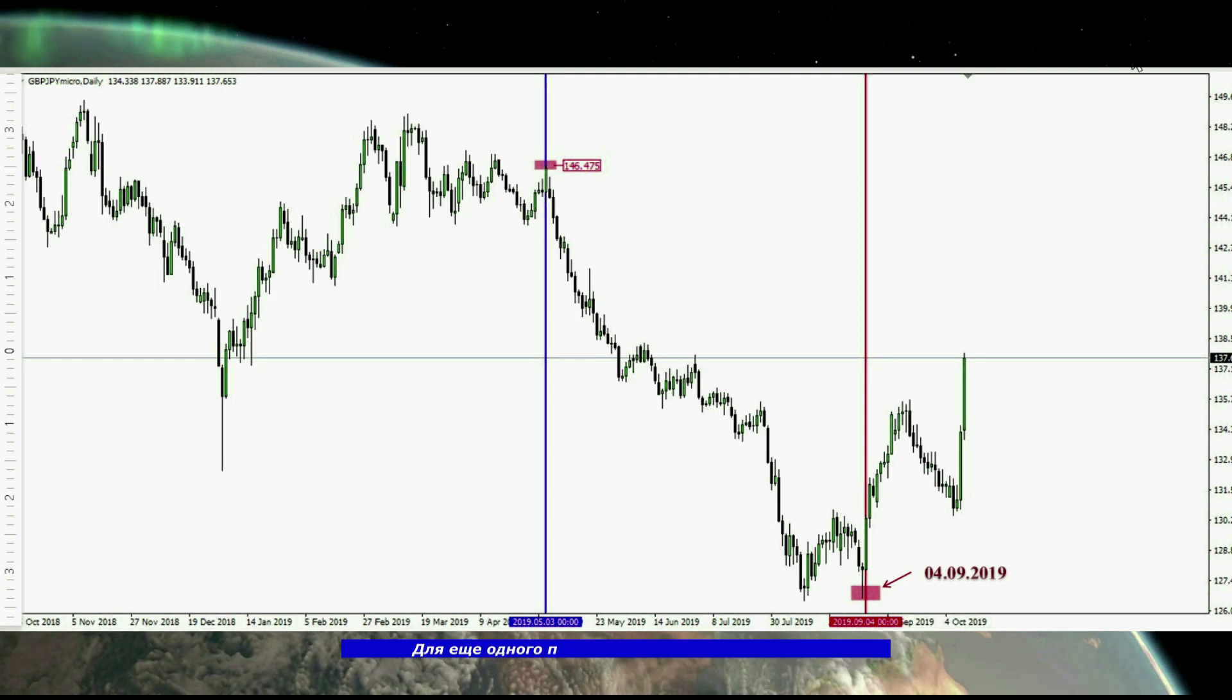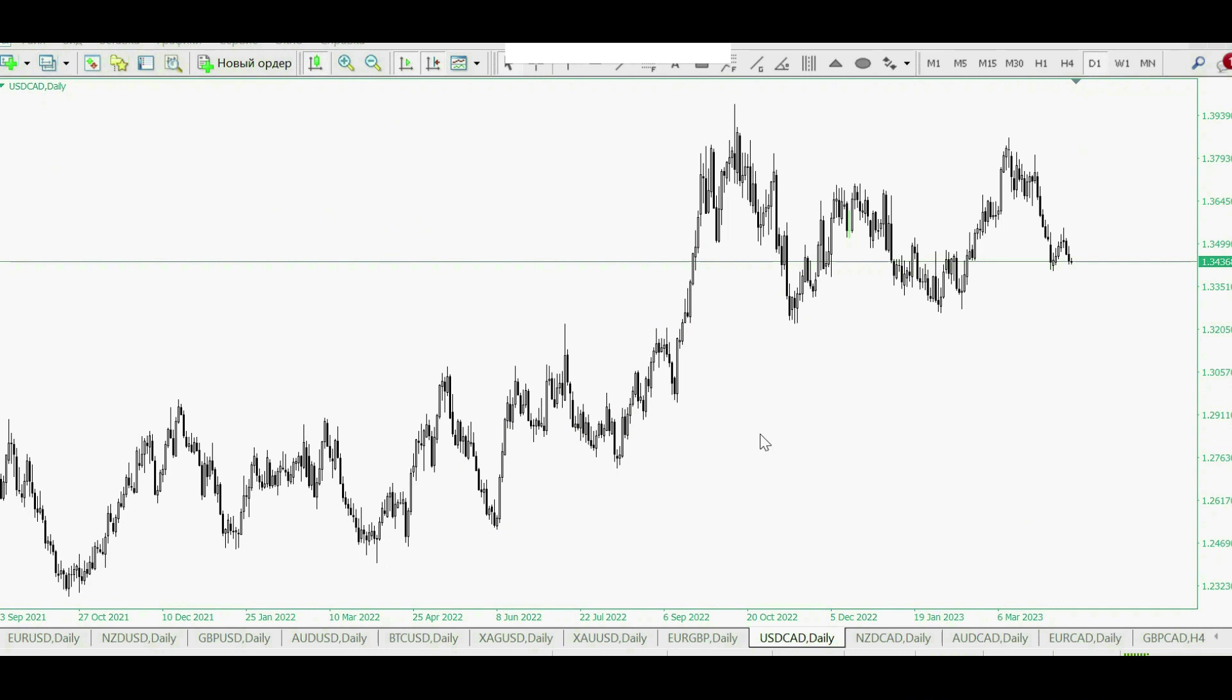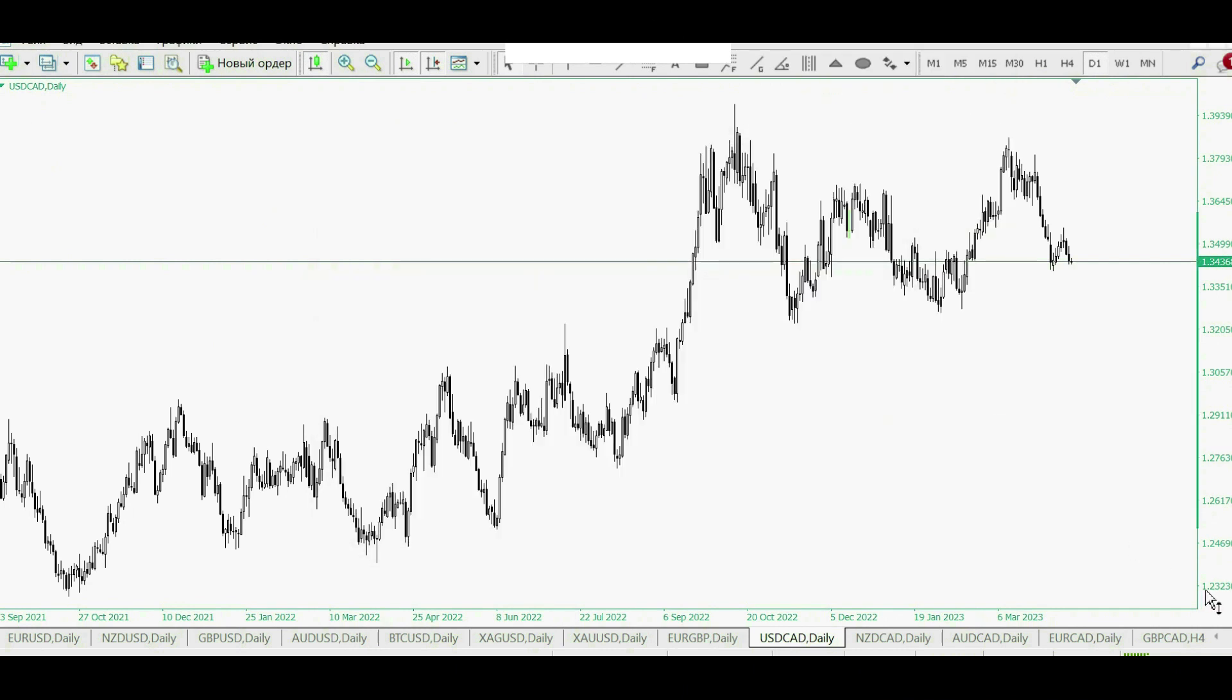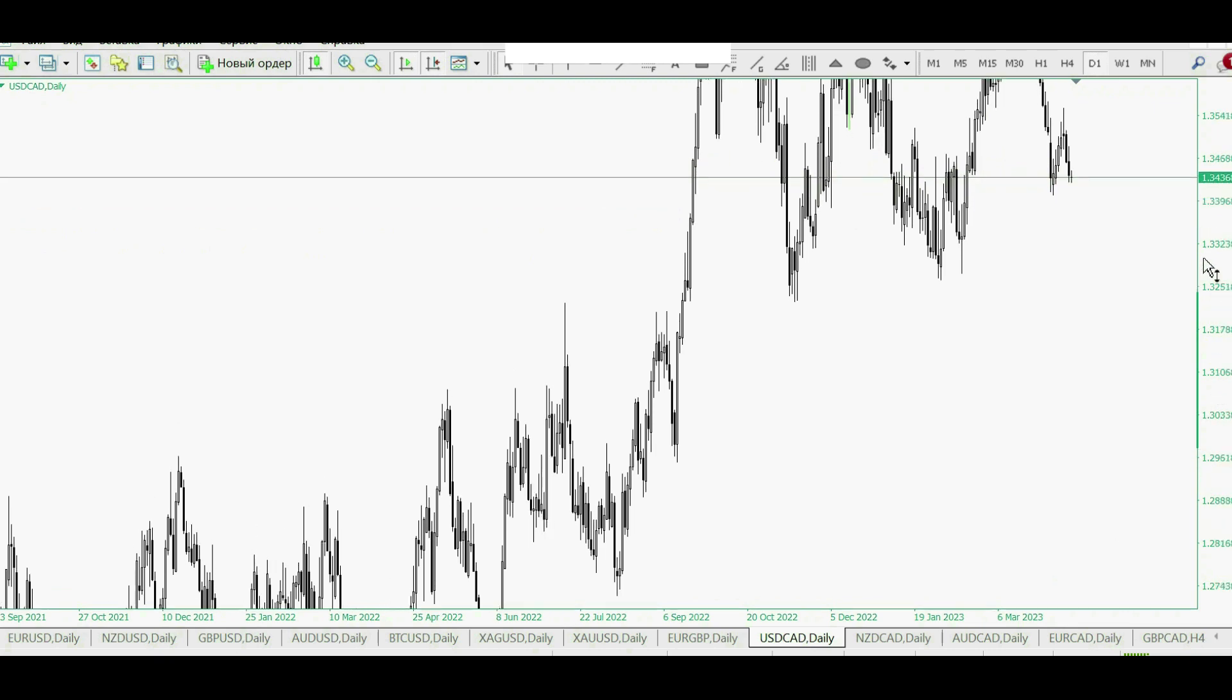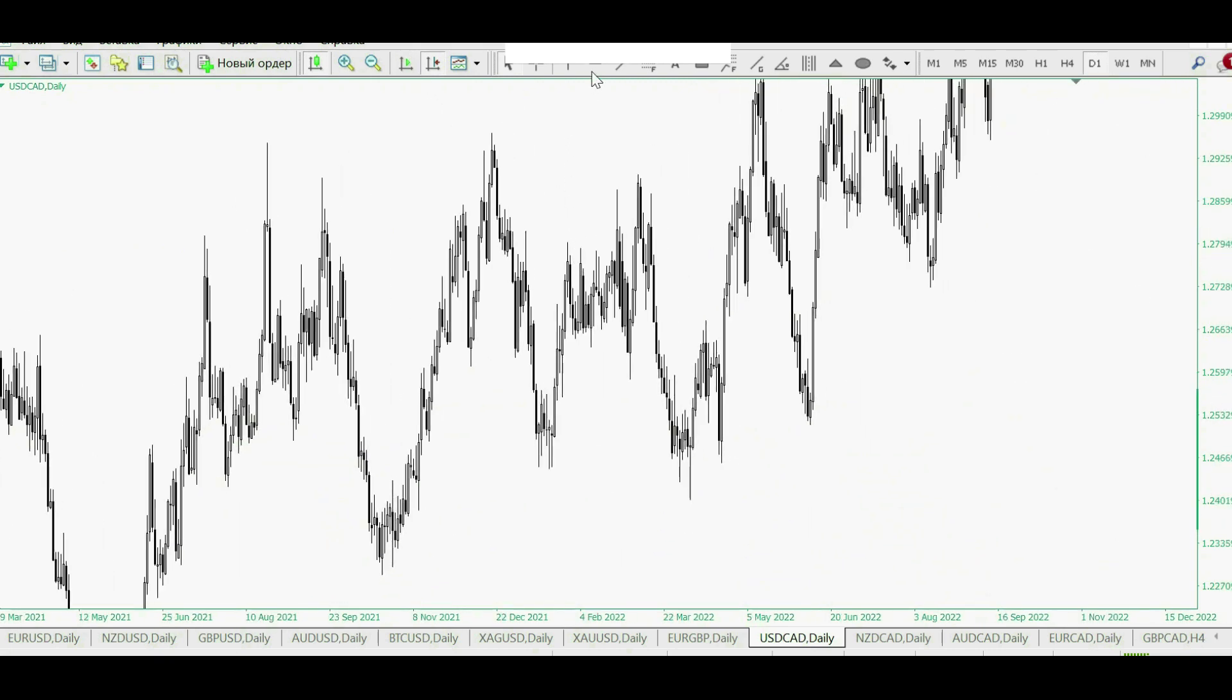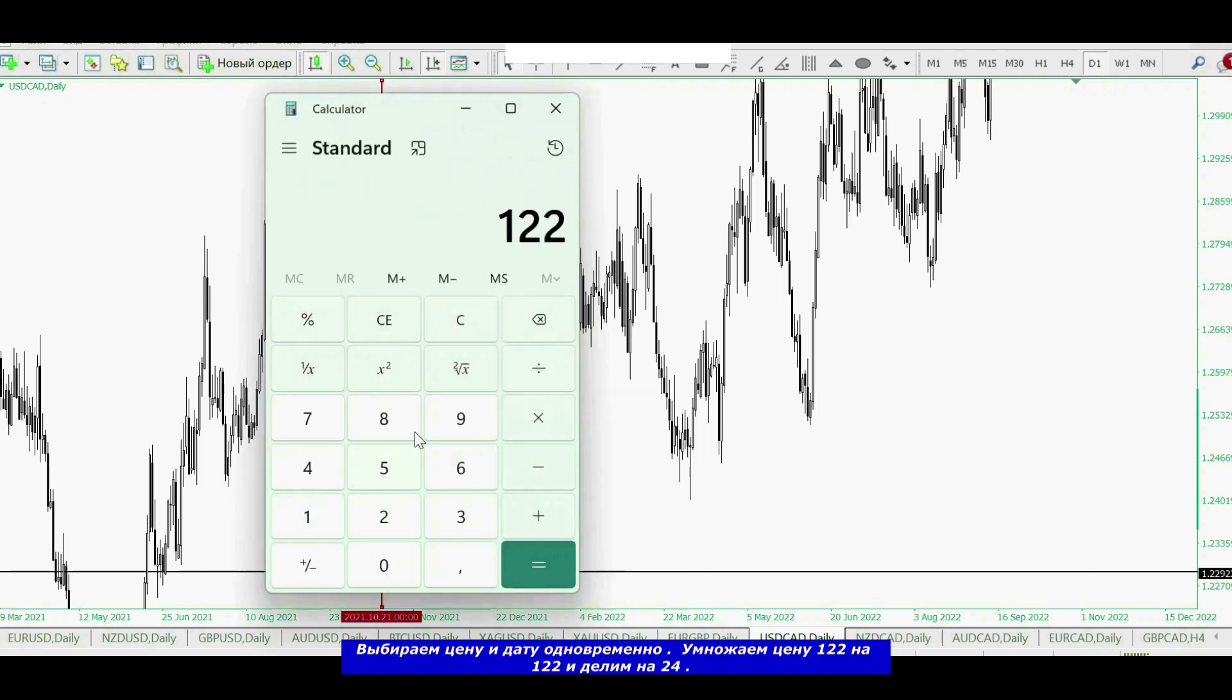For another example, let's look at the graph. We choose the price and the date at the same time. Multiply the price of 122 by 122 and divide by 24.